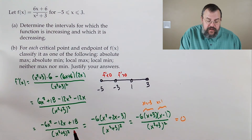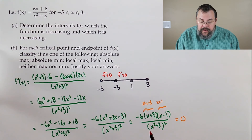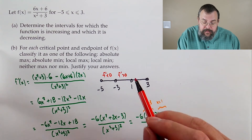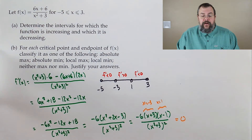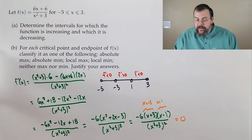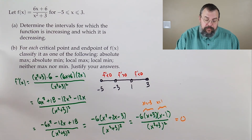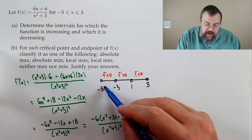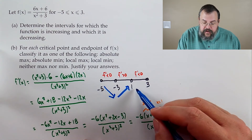Between 1 and 3, plug in 2: negative 6 times positive (2+3=5) times positive (2-1=1) gives a negative derivative. So the function is going down, then up, then down. We can say right away: negative 3 is a local min because we're coming down and up; x equals 1 is a local max. And at the endpoint negative 5, since we only look to the right and the function is going down, negative 5 is a local max. Similarly, at endpoint 3 the function is coming down to arrive there, so 3 is a local min.